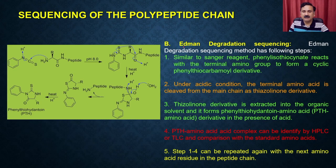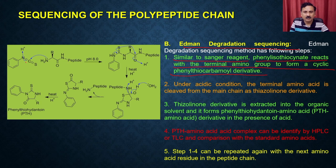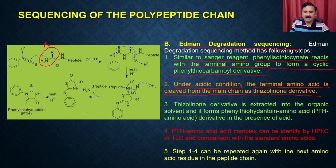In the Edman degradation method, the steps are similar to Sanger's but the reagent is different — phenyl isothiocyanate reacts with the terminal amino group to form a cyclized phenyl thiocarbamyl derivative. Under acidic conditions, the terminal amino acid is cleaved from the main chain as a thiocyanate derivative, giving the first amino acid as a PTH (phenylthiohydantoin) derivative. The thiocyanate derivative is extracted into organic solvent and forms the PTH amino acid complex.